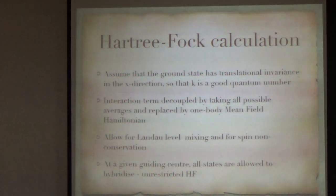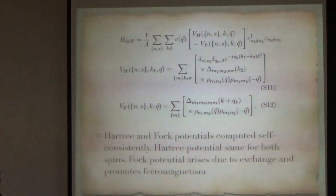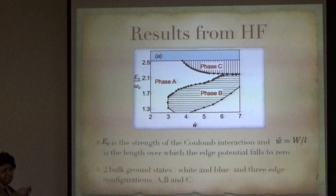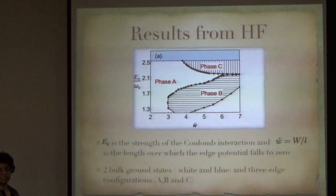We assume that the ground state has translational invariance in the x direction, so that K is a good quantum number. And the interaction term is decoupled by taking all possible averages and replaced by the one body Hamiltonian. And we allow for Landau level mixing and for spin non-conservation. So, at a given guiding center, all the states are allowed to mix. And we compute the Hartree and Fock potentials self-consistently. The Hartree potential is the same for spin up and spin down. The Fock potential is what arises due to exchange. And it actually favors, it is what is giving you the ferromagnetic ground state. So, again, I will show the results and I will explain the various features of this in the next few slides.